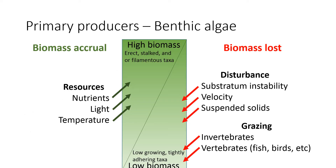When we think about how algae are controlled in a stream, you can think of it on two factors. Your biomass accrual is going to come from what resources are available — more nutrients, more light, warmer temperatures typically lead to higher biomass. When we're thinking about higher biomass, it often ends up being these erect stalked or filamentous taxa, because you're getting a lot of biomass growing off of a surface, which allows you to have much more algae per unit area.